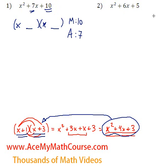For the second one, two numbers that multiply to 5 and add up to 6. But in this case, two numbers that multiply to 10 and add up to 7. What will they be? How about 2 and 5? 2 plus 5 is 7, 2 times 5 is 10. Fantastic. So that's the answer.